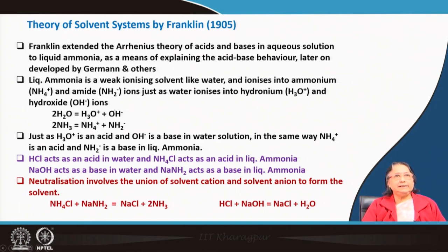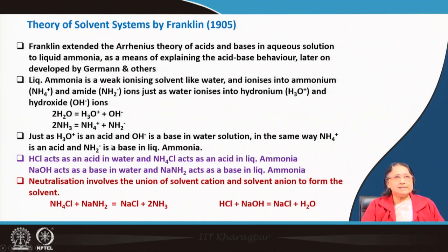Franklin extended this theory to another solvent — liquid ammonia. We know that many reactions are carried out in liquid ammonia, and he said that just like water molecules, ammonia can also give ammonium ion and amide ion. This cationic part and anionic part are very similar to the Arrhenius concept. He said that something in liquid ammonia which gives ammonium ion is an acid, and something which gives amide ion is a base.